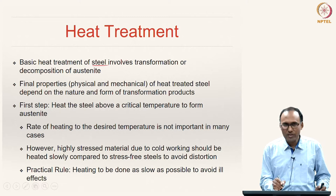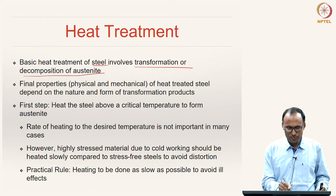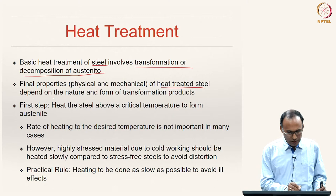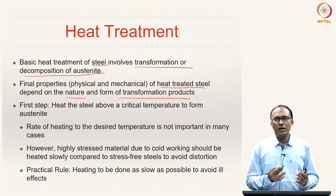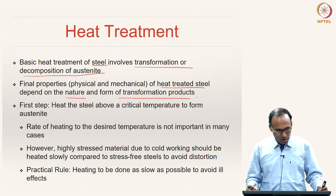We will be discussing only about the heat treatment of steels here. The basic heat treatment of steel involves transformation or decomposition of austenite — that is the basic basis of heat treatment. The final properties, both physical and mechanical, of heat treated steel depend on the nature and form of transformation products, whether the product is forming at high, medium, or very low temperature.